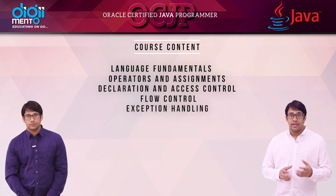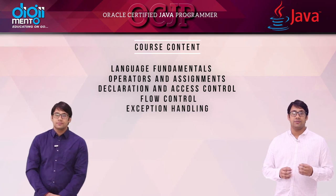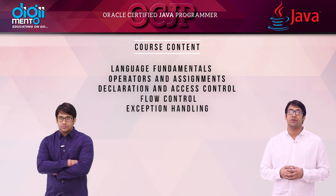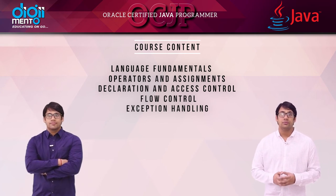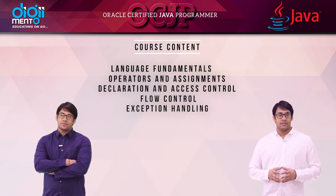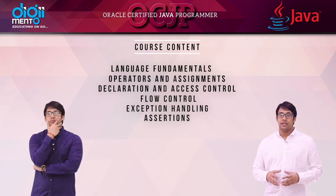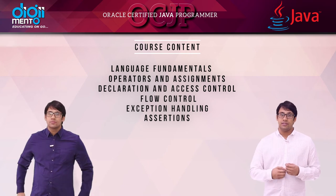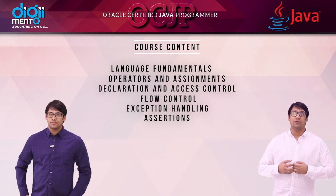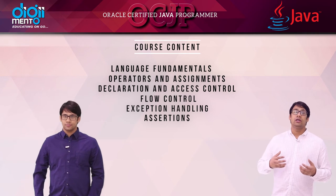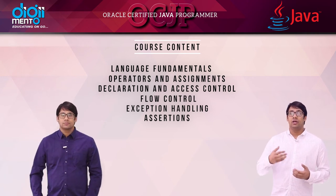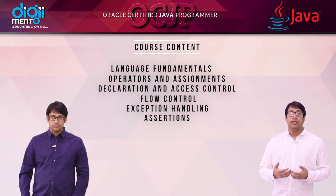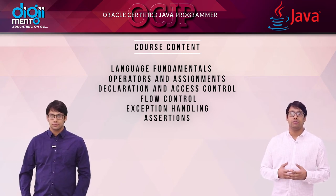Then we will discuss exception handling — what exceptions are, how to raise an exception, how to handle those exceptions, and the different types of exceptions. After that, we will cover assertions, object-oriented concepts, inner classes, threads, and concurrency control. Threads and concurrency is a very interesting chapter, including examples of how synchronization methods work, the problems you face with thread synchronization, and how to resolve them.